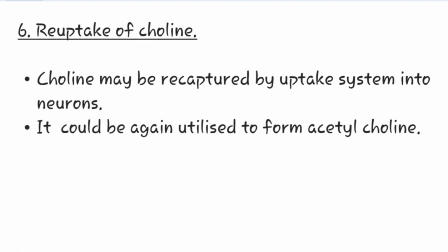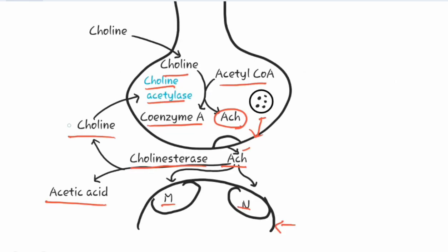The last step of parasympathetic transmission is reuptake of choline. Choline may be recaptured by the uptake system into the neurons and can be again utilized to form acetylcholine, making it available for reuse in the formation of acetylcholine.